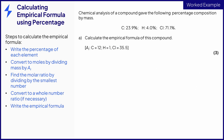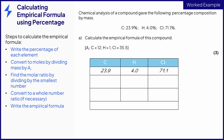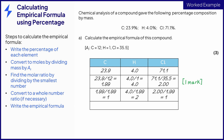This question gives the percentage composition by mass of each element instead of the mass, but the steps to calculate the empirical formula are still the same, except that you write the percentage of each element down first. If you assume that you have 100 grams of the compound, then 23.9 grams will be carbon, 4 grams will be hydrogen, and 71.1 grams will be chlorine. Then calculate the number of moles by dividing by the relative atomic mass. Now find the molar ratio by dividing by the smallest number of moles, which in this case is 1.99. It is not necessary to convert to a whole number ratio, as it already is, which just leaves the final step to write the empirical formula.